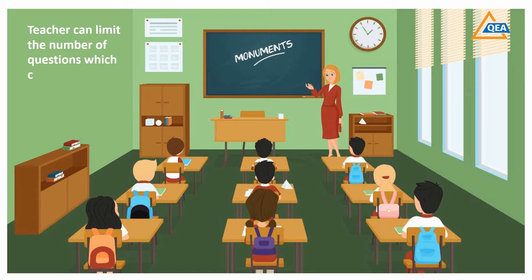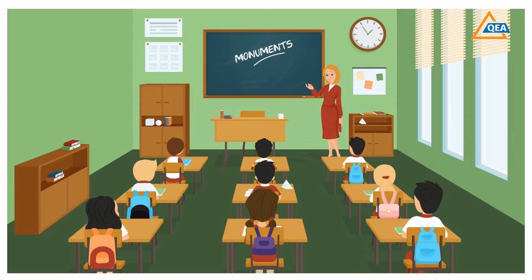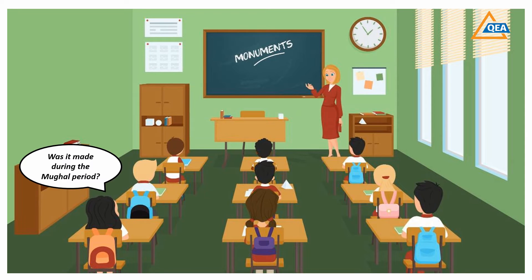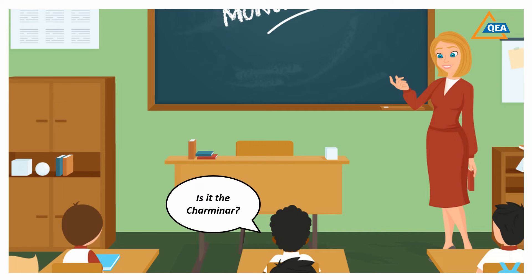Students will now have to ask intelligently to reach the correct answer. Students may ask questions like: 'Is the monument in India?' — the teacher will say yes. 'Is it in South India?' — yes. 'Was it made when the British were ruling?' — no. 'Was it made during the Mughal period?' — yes. The question-answer session will go on till the students exhaust the number of questions they can ask, or if they get the right answer before that, the students win.